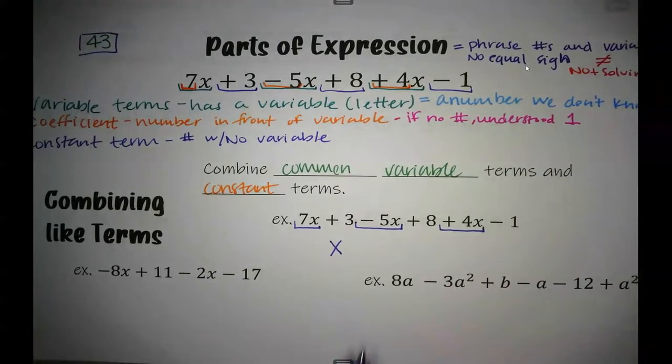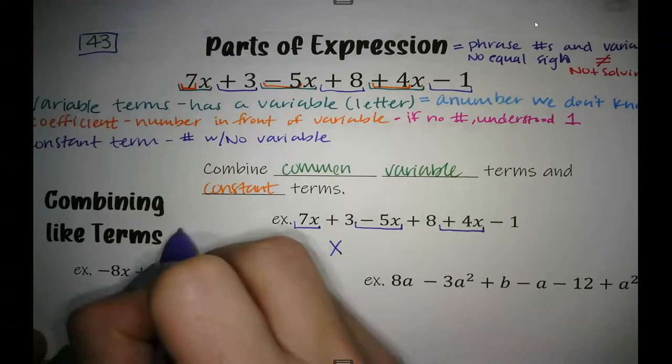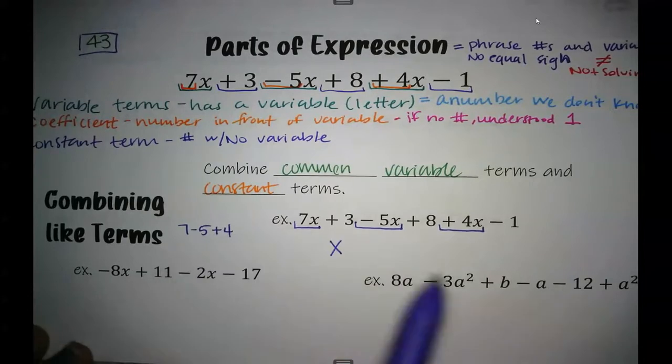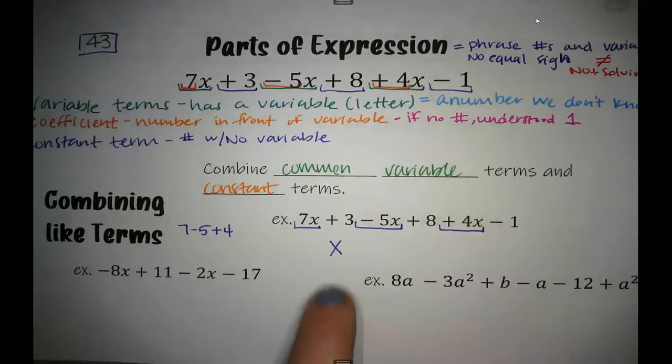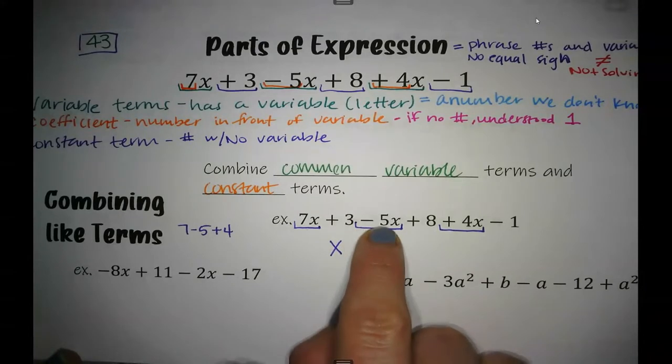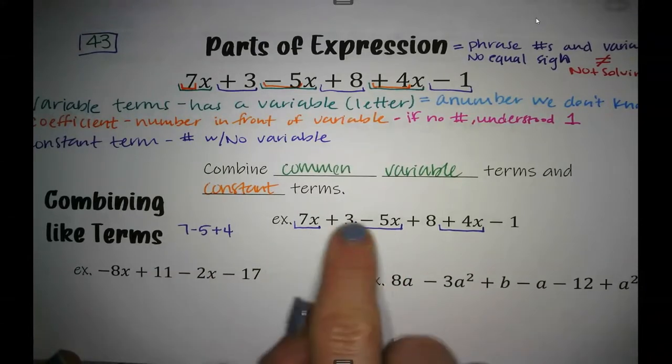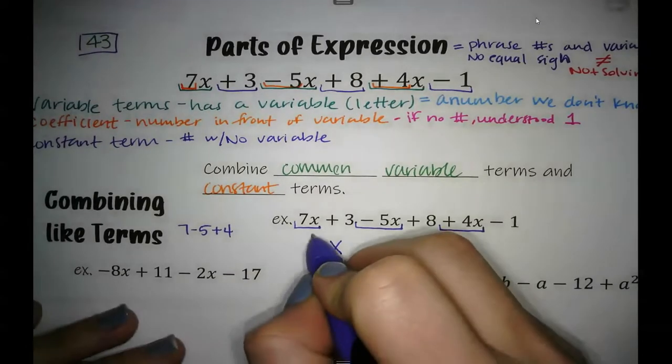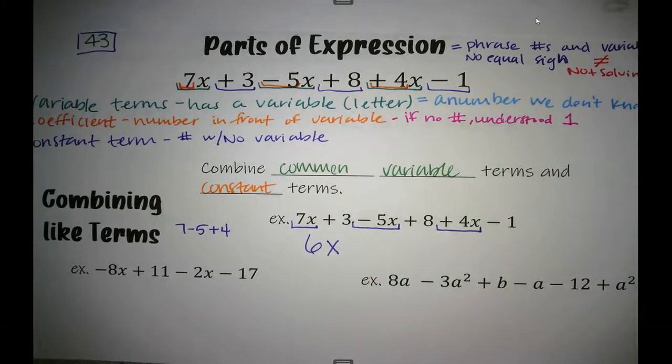All I'm going to do is, on the side, take those numbers in front and do those operations in the order that they are in. Remember that negative sign travels with that 5. So I've got 7 minus 5 plus 4, and that ends up being 6. So now I've got 6x.